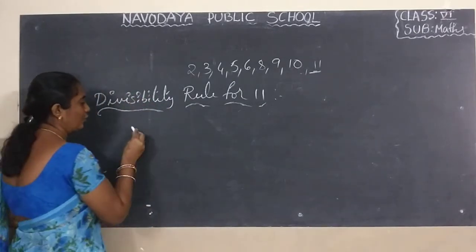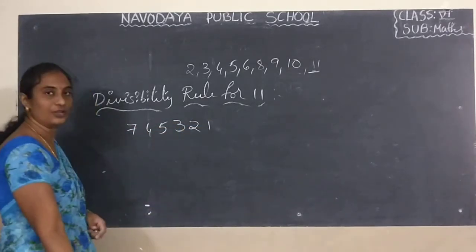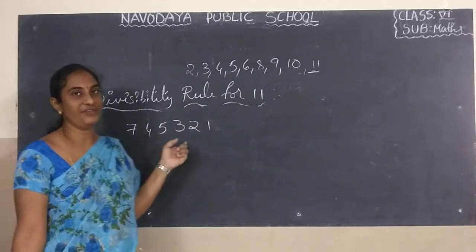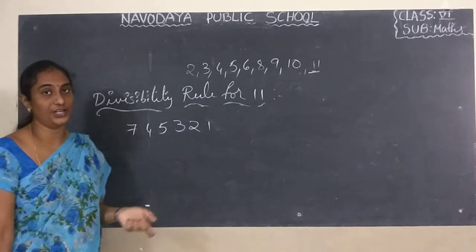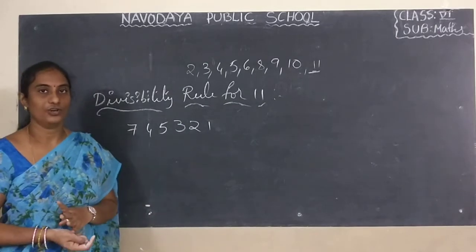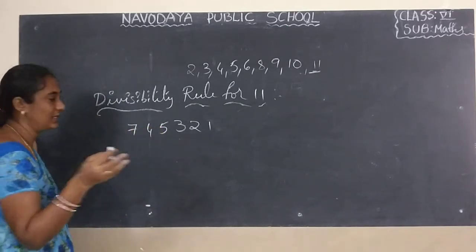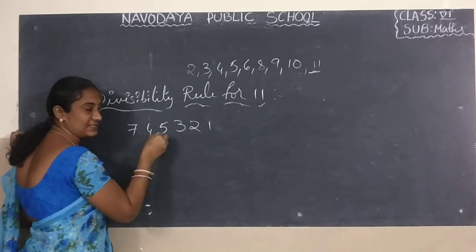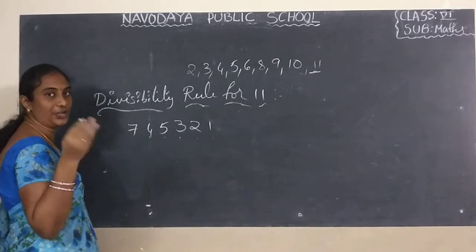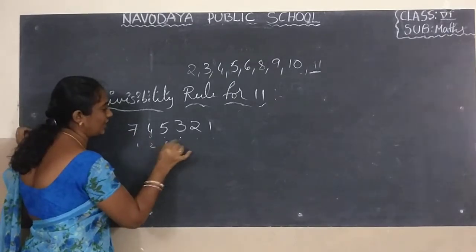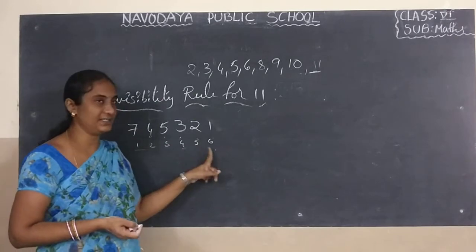Now let us pick one number: 7, 4, 5, 3, 2, 1. By observing this number, we have to find out if it is divisible by 11 or not. We have to find out the even places and odd places. This is the first place, second place, third place, fourth place, fifth place, sixth place. Even place numbers are 2, 4, 6.